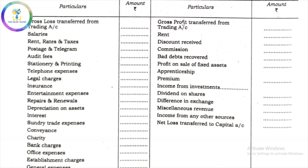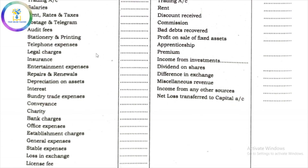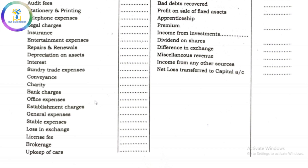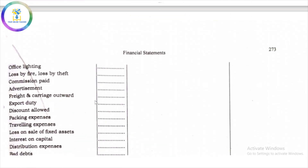On the debit side we record all indirect expenses: salaries, rent, postage, audit fee, stationery, telephone expenses, legal charges, insurance, entertainment expenses, repairs, depreciation, interest paid, sundry expenses, conveyance, charity, bank charges, office expenses, brokerage, and upkeep of cars.